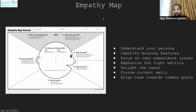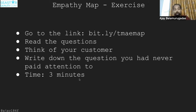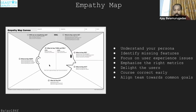There is a small exercise for you. Go to the link bit.ly/TMA-emap — that's TMA for Test Masters Academy and e-map for empathy map. You'll see the canvas. Read the questions, think of your customer, and write down the question you had never paid attention to before seeing the empathy map. You have three minutes — your time starts now. Read through the questions and see which question you did not think of until now, then type it in the chat.